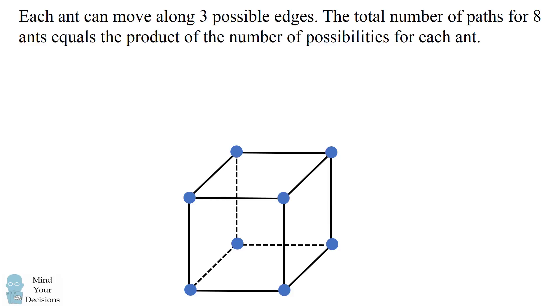So let's first consider the total number of ways that the ants can move. Each ant can move along three possible edges. The total number of paths for eight ants equals the product of the number of possibilities for each ant. This means the total number of paths will be three to the power of eight which equals 6561.